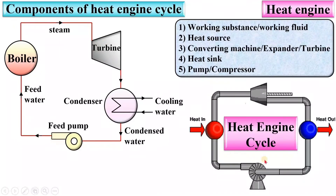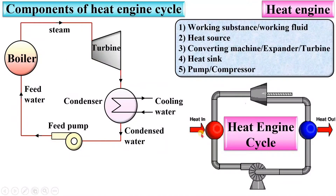Here you can see the animation of the heat engine cycle. This is the turbine and this one is the pump. This one is the boiler where heat is supplied, and here heat is rejected with the help of the condenser.